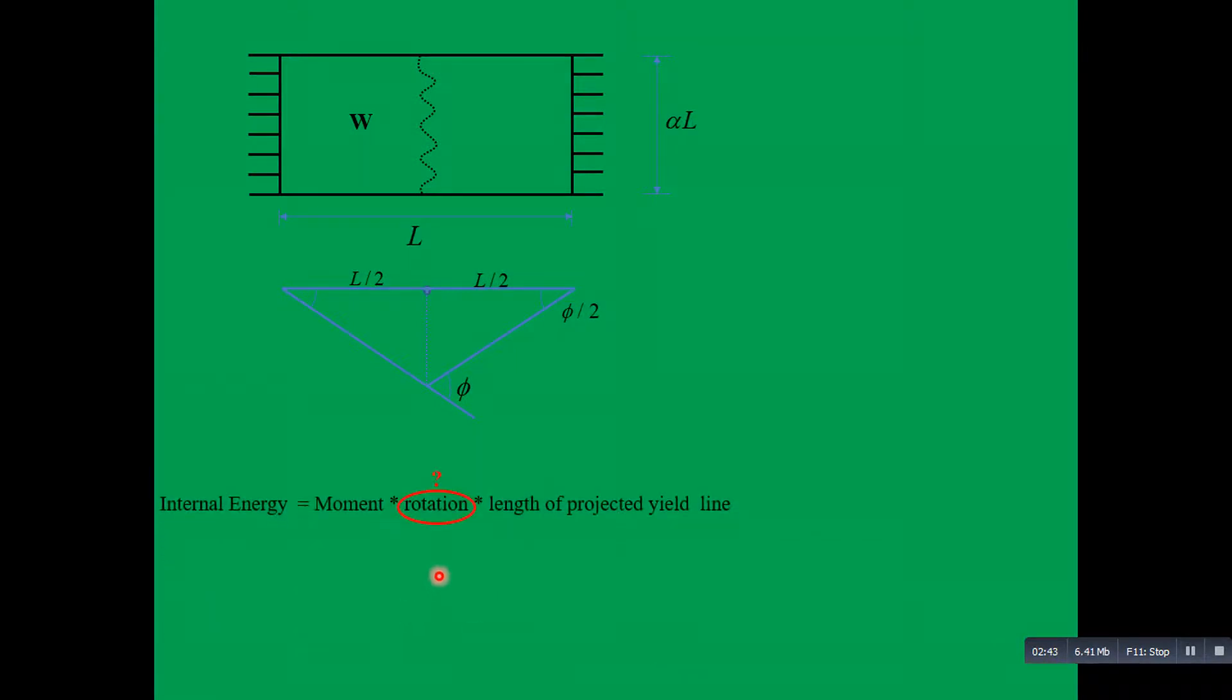Our first task will be to determine the rotation angle phi. We'll take this right angle triangle. It has a rotation angle phi over 2, a length of L over 2, and total deflection delta. Using trigonometry, tan phi over 2 will equal delta over L over 2. But notice this rotation is very small, so for small angles tan of that angle equals the angle itself. So phi over 2 equals delta over L over 2, reducing the terms, phi will be 4 delta over L.